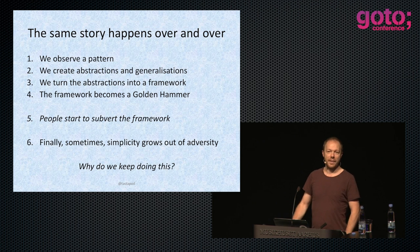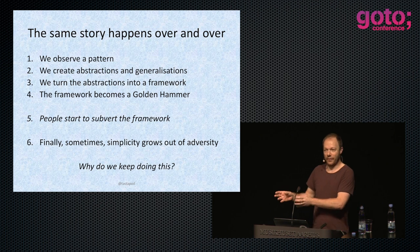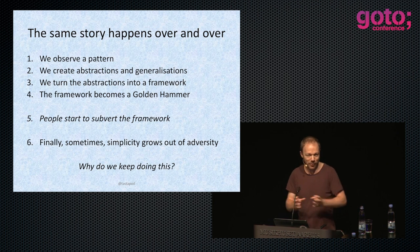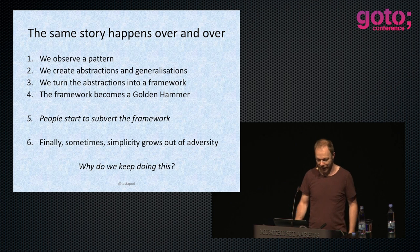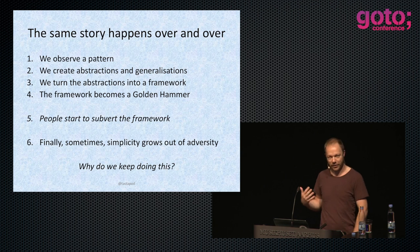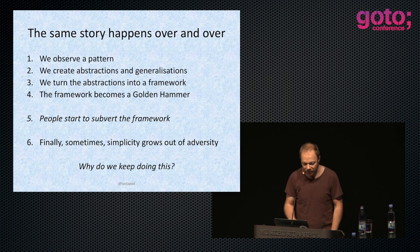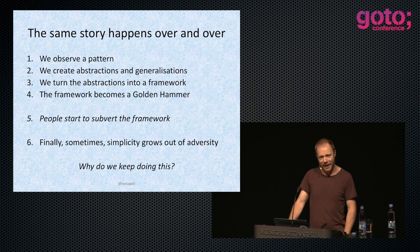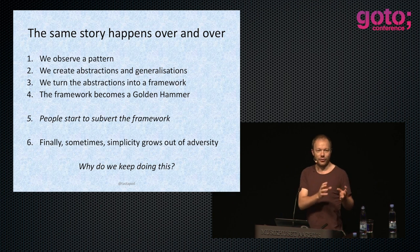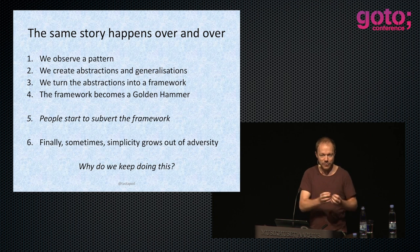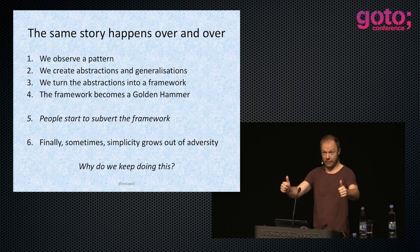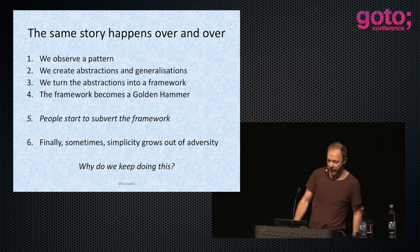So this is how it works. We observe a pattern — we see a thing that happens more than once, typically only twice, but more than once. And we're designed to see patterns — I saw this thing that's nearly like that. So we go, okay, well what we're going to do is create an abstraction, create a generalization, because that's useful, that's a thing that might help, because we're just trying to help. So then abstractions we turn into a framework — not only can I describe this idea, I can give you a thing that does it for you. You don't have to think. So the framework then becomes a golden hammer — we will use, I don't know, insert Ruby on Rails everywhere.